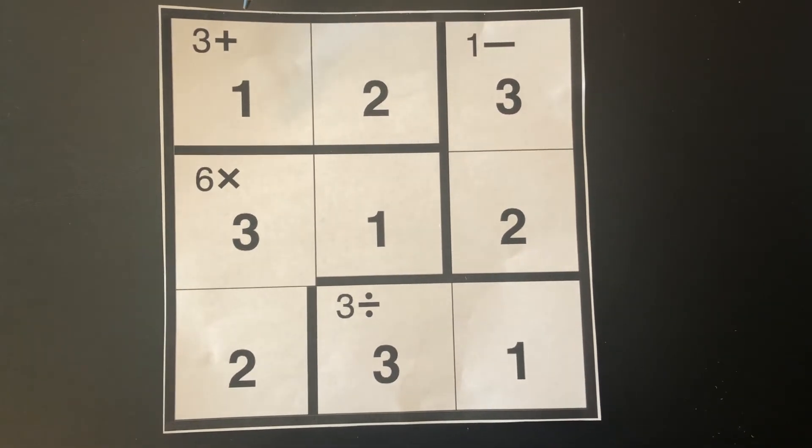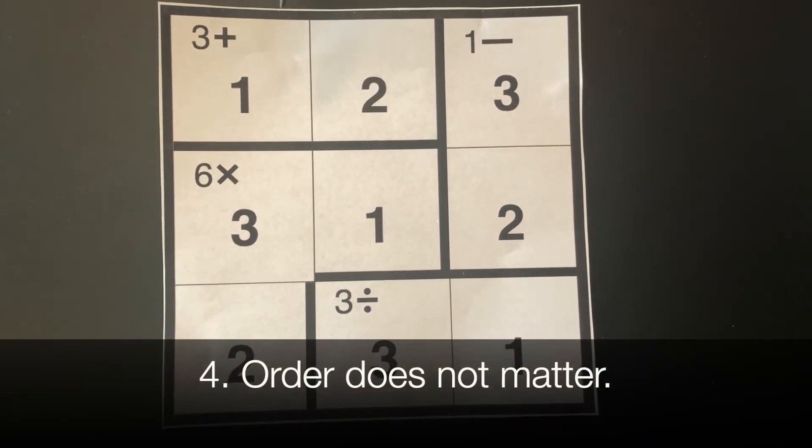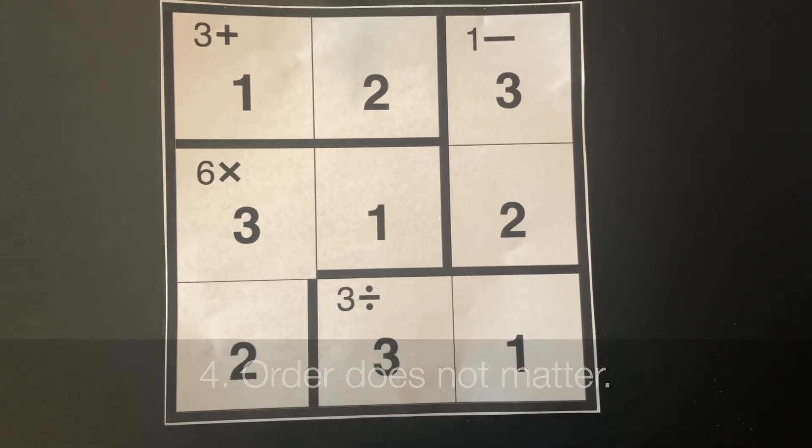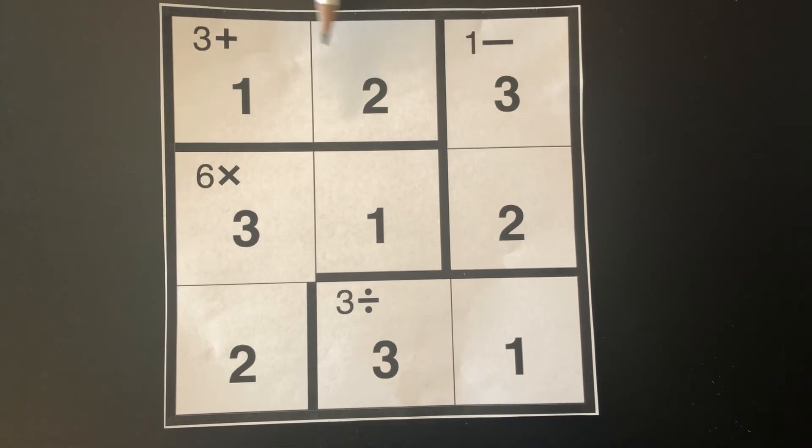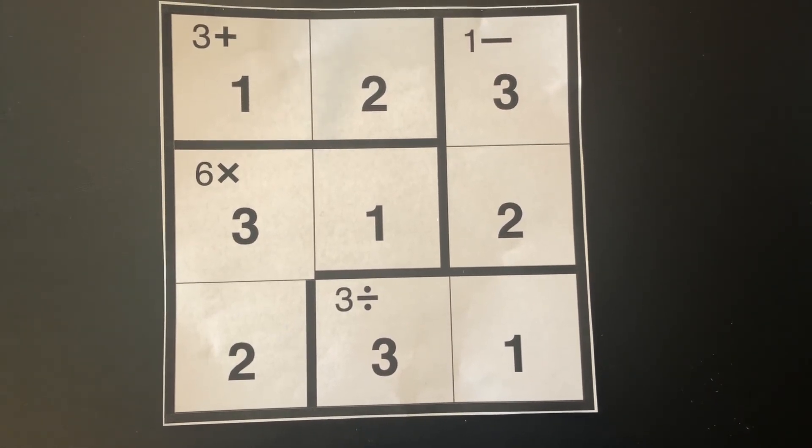Number four, the order of numbers in a cage does not matter. For example, three plus could be one and two, or depending on the puzzle, it could be reversed and be two and one.